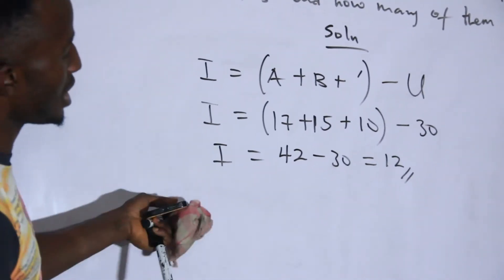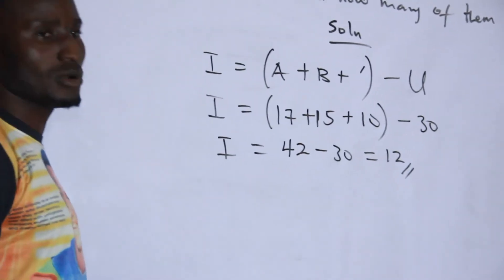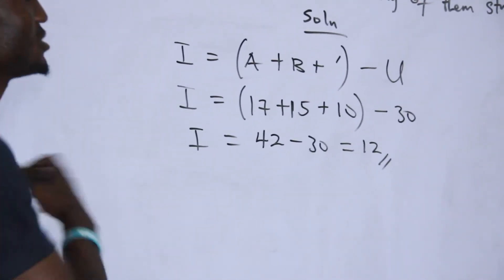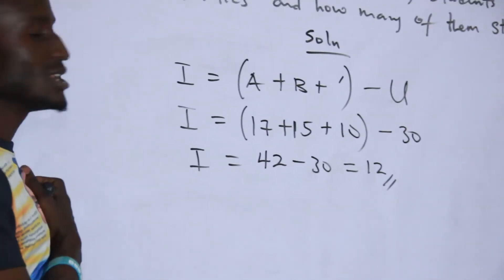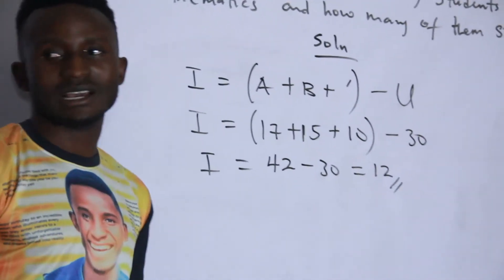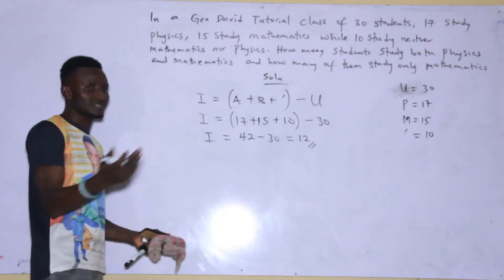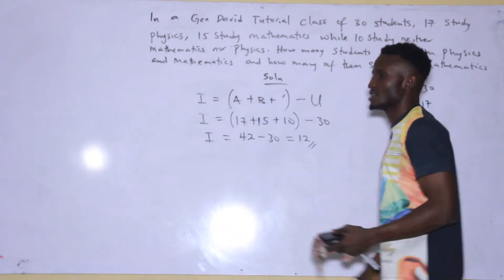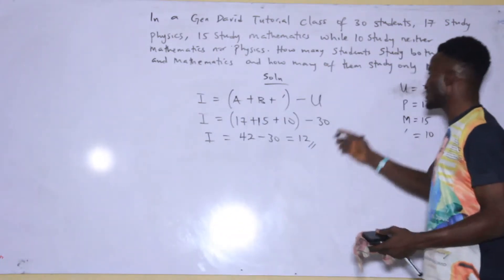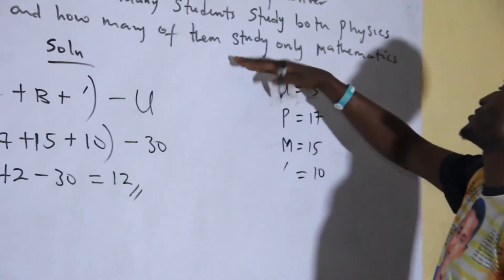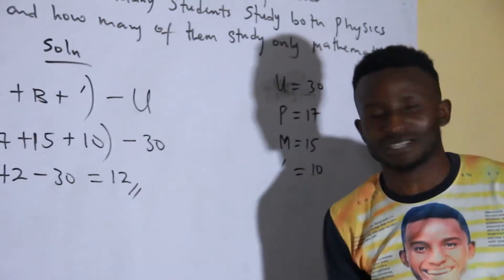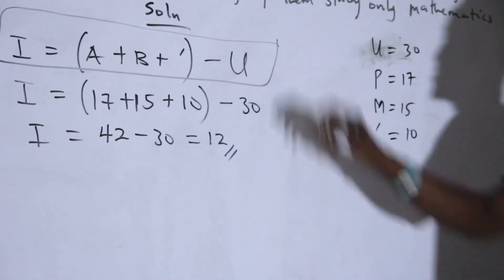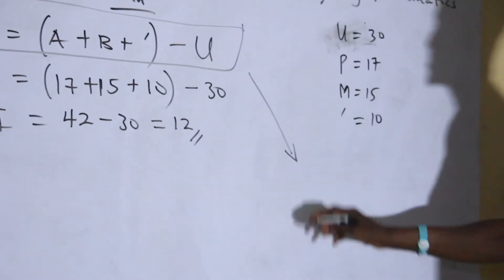So we were able to derive the intersection — those that study both mathematics and physics. With this formula, we've been able to solve the first question. But the second question says: how many students study only mathematics? Now with this shortcut formula, I will still use this approach.